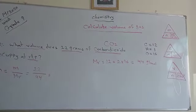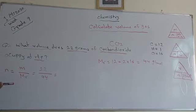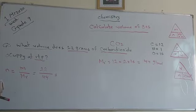So the number of moles: 22 divided by 44 equals 0.5 moles.